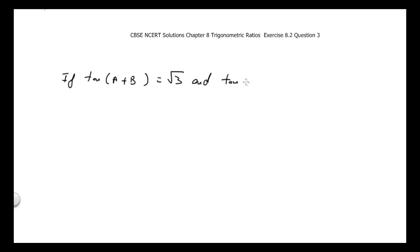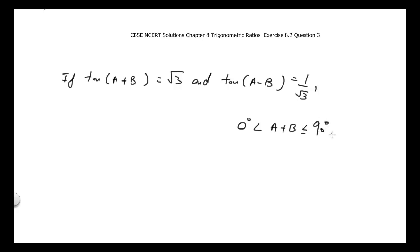If tangent of (A + B) is equal to √3 and tangent of (A - B) is equal to 1 divided by √3, and it is given that (A + B) is greater than 0° and less than or equal to 90°, where A is greater than B, find A and B.